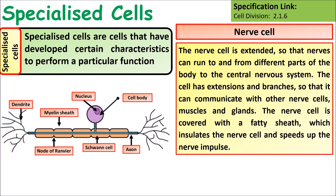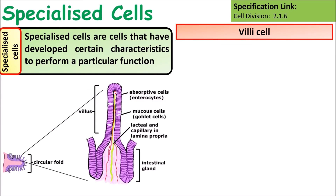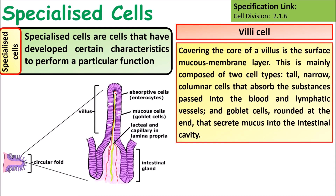The nerve cell is an extended, longer cell so that nerves can run to and from different parts of the body and to the central nervous system. The cell has extensions and branches so it can communicate with other nerve cells, muscles, and glands. The nerve cell is covered with a fatty sheath which insulates it and helps speed up nervous transmission.